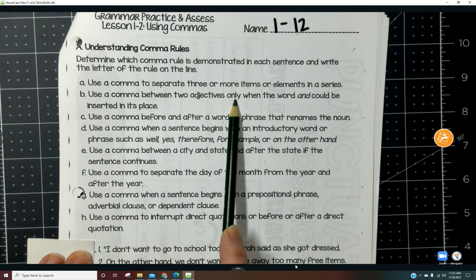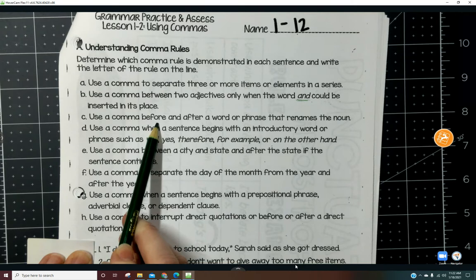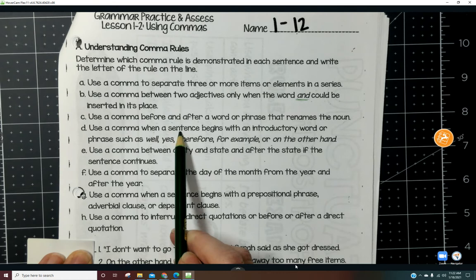Use a comma between two adjectives only when the word 'and' could be inserted in its place.